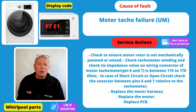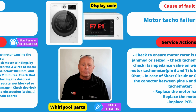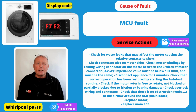F7E1 error code is indicating that you've got a motor fault, PCB fault, or a problem with the wiring going through to the motor. It's suggesting there's a tachometer fault on the motor — this is what counts the RPM of the motor, sending the information to the circuit board. Error Code F7E2 is indicating that you've got an MCU fault. It's telling you to do some basic tests on the motor and check the harness, or you may have a problem with the circuit board.